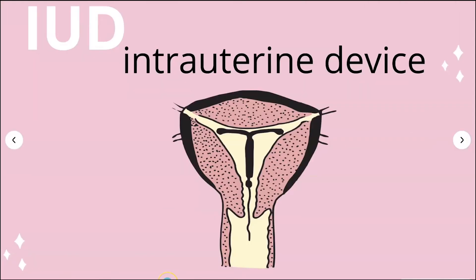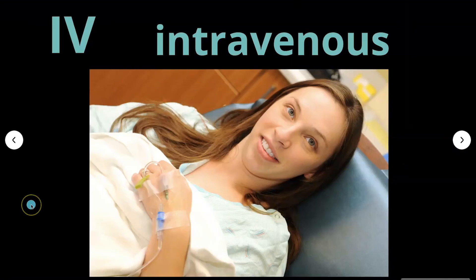IUD is an intrauterine device. They have copper IUDs and hormonal IUDs. They prevent pregnancy by changing the way sperm cells move so they can't get to an egg, and if sperm can't get to an egg, there's no pregnancy.